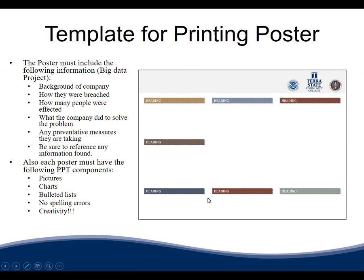My students doing the big data project had to include on the poster: the background of the company they chose, how they were breached, how many people were affected, what the company did to solve the problem, any preventative measures they're taking, and references for their information. On each poster we have a grading rubric, but in general students must include at least one picture, one chart, bulleted lists, absolutely no spelling errors since we're printing these, and creativity is expected.